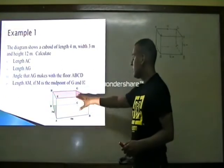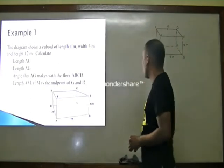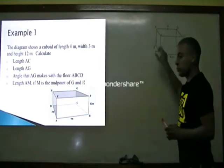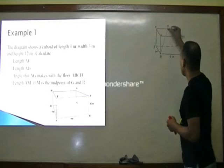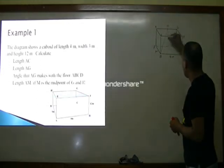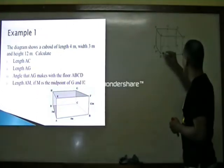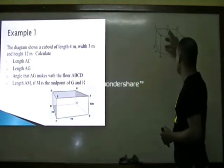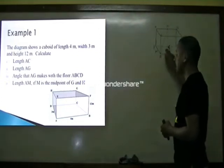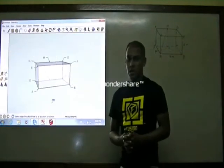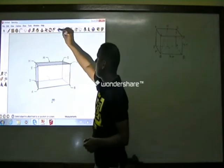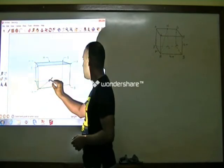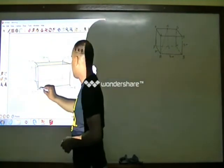The last part of this question is to find the length AM, where M is the midpoint of GH. To find this, we drop a perpendicular from M to the length DC, calling that point N. This gives us triangle AMN. We need to find AN first, so we are going to use triangle ADN, and then find AM from triangle AMN.